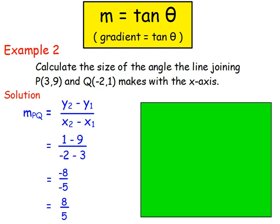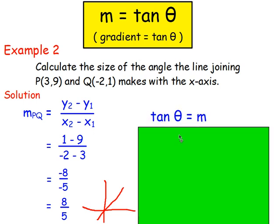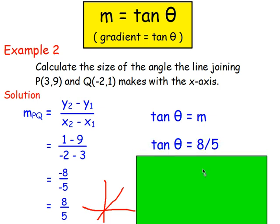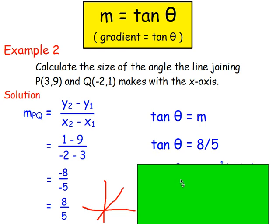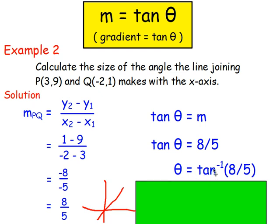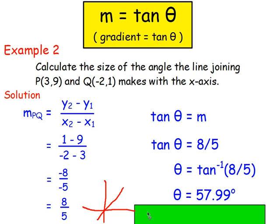Because it's a positive gradient, the line slopes up from left to right. Now we know the gradient, so we can work out the angle using TAN theta equals m. So TAN theta equals 8 over 5. To find theta, use inverse TAN: theta equals TAN⁻¹ of 8 over 5, which gives 57.99 degrees — round to one or two decimal places. That is your answer.